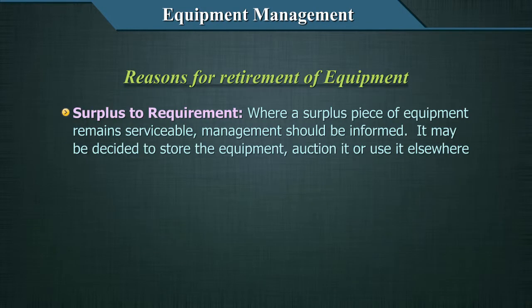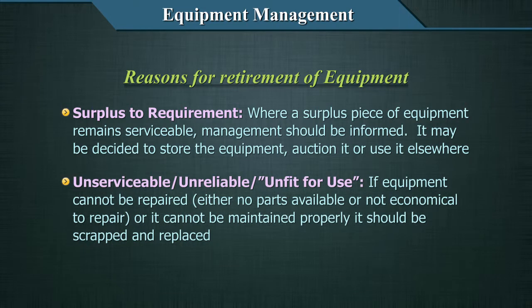Reasons for retirement of equipment include: surplus to requirement — where a surplus piece of equipment remains serviceable, management should be informed and it may be stored, auctioned, or used elsewhere; unserviceable, unreliable, or unfit for use — if equipment cannot be repaired because no parts are available, it is uneconomical to repair, or it cannot be maintained properly, it should be scrapped and replaced.